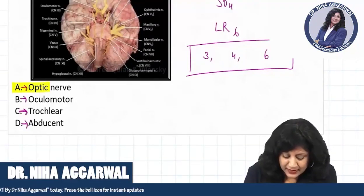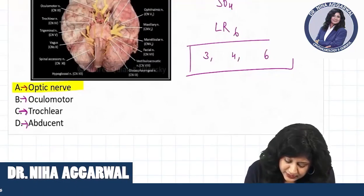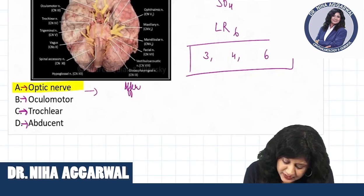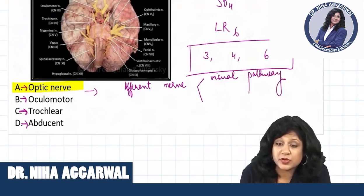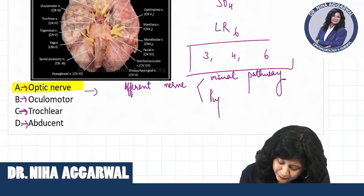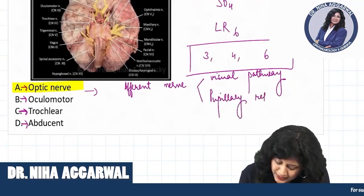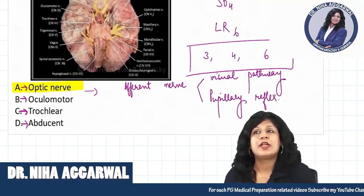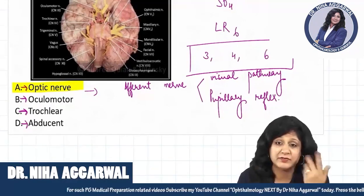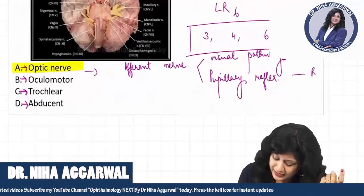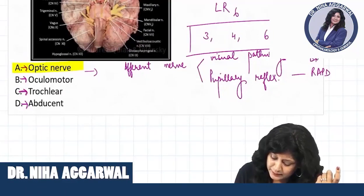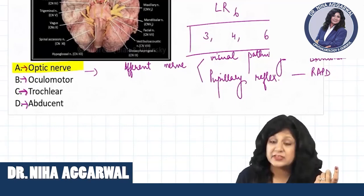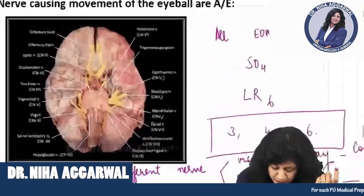In that case, your answer will be A — the optic nerve — because the optic nerve is your afferent nerve. This is the afferent nerve not only for the visual pathway but also for the pupillary reflex pathway. If the optic nerve is not intact, we get what is called RAPD, and we also get complete anopia on that side, or complete blindness on that side. So the optic nerve has nothing to do with ocular motility.